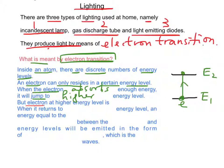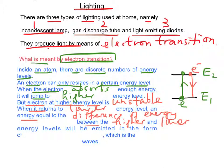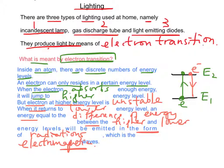However, an electron at a higher energy level is unstable. When it returns to a lower energy level — in this case, from energy level E2 to E1 — an energy equal to the difference between the higher and lower energy level will be emitted in the form of radiation, which is the electromagnetic wave, or we say light wave.